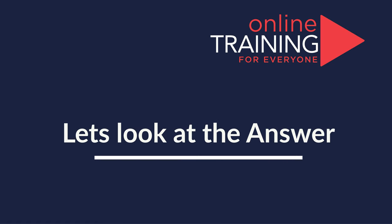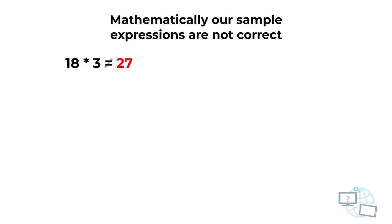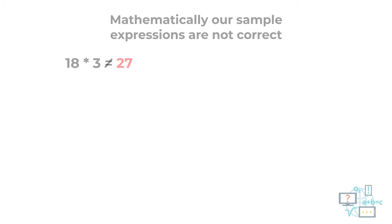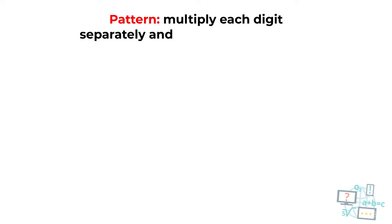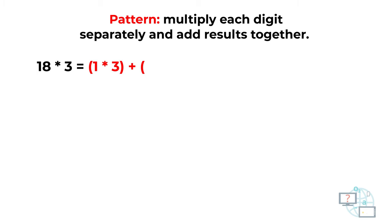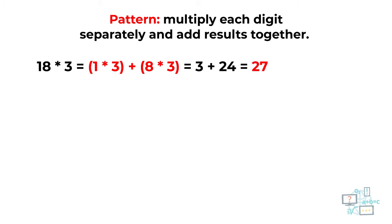Even though mathematically our sample expressions are not correct — for example, 18 by 3 is not equal to 27 — if you multiply each digit separately and add the results together, you will get the result you need. For example, 18 by 3 should be processed as (1 multiplied by 3) plus (8 multiplied by 3), which equals 3 plus 24, which equals 27.